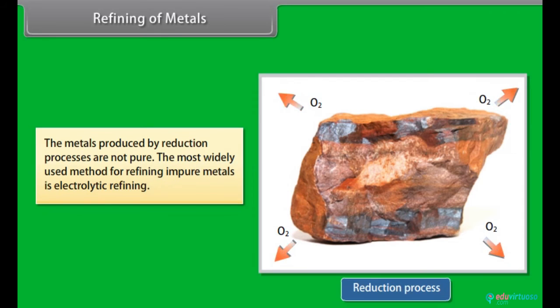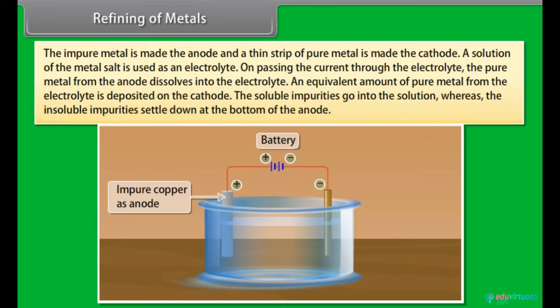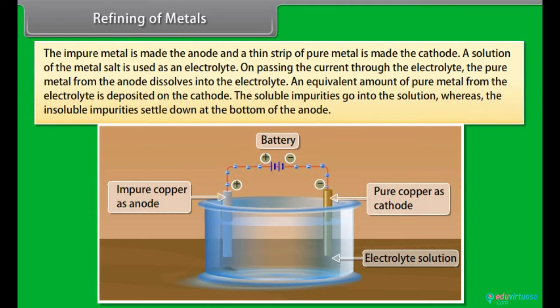Refining of metals. The metals produced by reduction processes are not pure. They still contain impurities which must be removed to obtain pure metals. The most widely used method for refining impure metals is electrolytic refining. Many metals are refined electrolytically. The impure metal is made the anode and a thin strip of pure metal is made of cathode. A solution of the metal salt is used as an electrolyte. On passing the current through the electrolyte, the pure metal from the anode dissolves into the electrolyte. An equivalent amount of pure metal from the electrolyte is deposited on the cathode. The soluble impurities go into the solution whereas the insoluble impurities settle down at the bottom of the anode. These are known as anode mud.